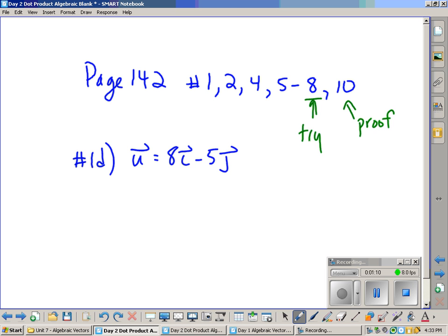Remember that the i vector is the x part of the component. The j vector is the y part of the component, and the k vector is the z part of the component. So this is just a fancy way of saying this.